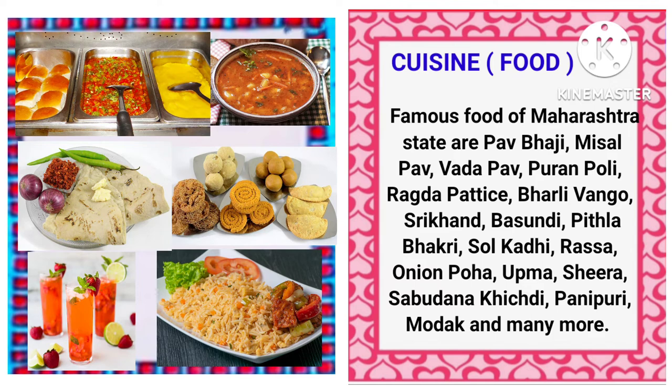Cuisine and food: Famous food of Maharashtra state are Pao Bhaji, Misal Pao, Vada Pao, Puran Poli, Ragda Petis, Bharli Vango, Shrikhand, Basundi, Pichla Bhakri, Sol Kadhi, Rasa, Onion Poha, Upma, Sheera, Sabodana Khichdi, Panipuri, Modak and many more. And here are some pictures of dishes of Maharashtra state.